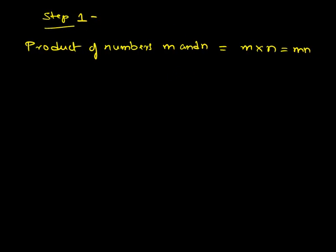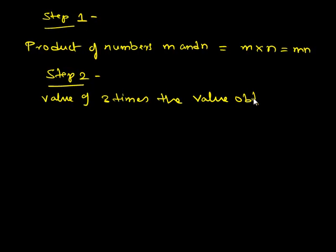Now let us move to the second step. Now we have to find the value of three times the value obtained in the first step. That is, here the value obtained in the first step is nothing but MN.